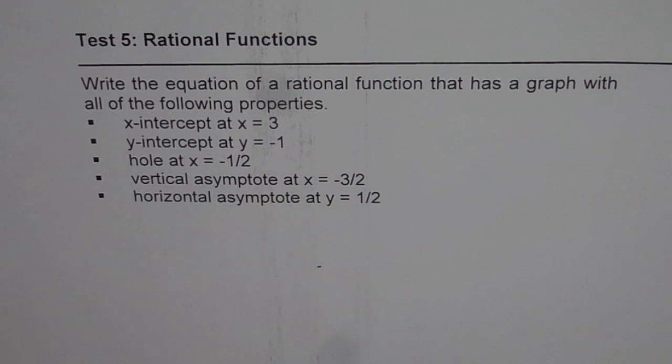write the equation of a rational function that has a graph with all of the following properties. X intercept at X equals to 3, Y intercept at Y equals to minus 1, hole at X equals to minus half, vertical asymptote at X equals to minus 3 over 2, and horizontal asymptote at Y equals to half.